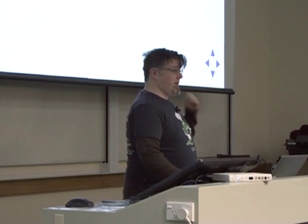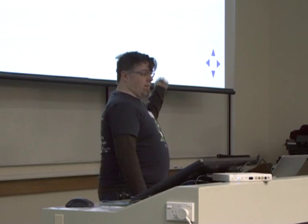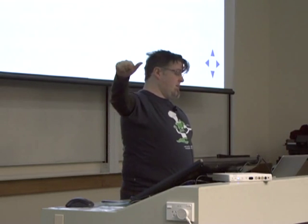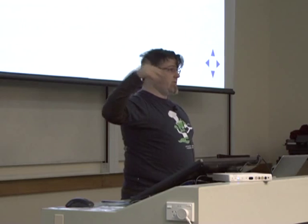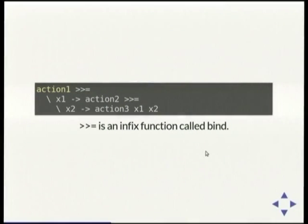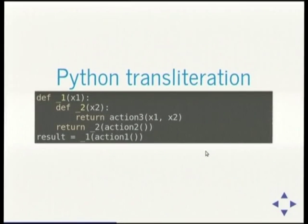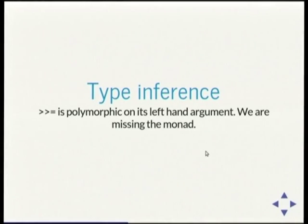The backslash in Haskell is equivalent to the Python lambda colon thing. Action one is bound to a function which takes a parameter x1, action two is bound to a function that takes x2, and that passes x1 and x2 to action three. It's a whole lot of boilerplate just to write three lines of code. If you try to translate that straight to Python it's just mental — you've got two inner functions and you start out on the other side and evaluate the function all the way down.